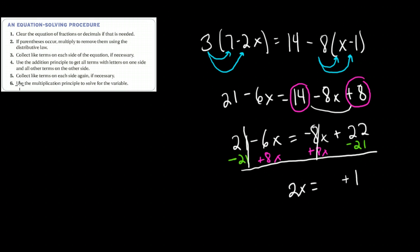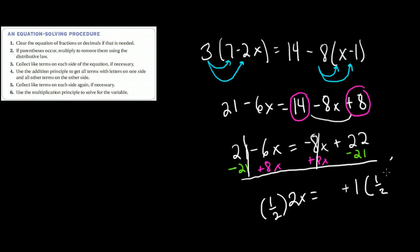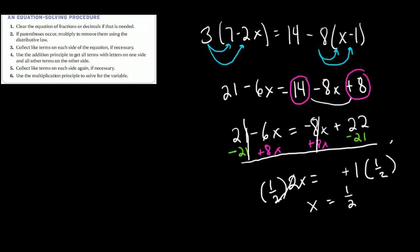I don't have like terms on both sides, so now I can use the multiplication principle. Let's go ahead and divide both sides by 2. Remember, dividing by 2 is the same thing as multiplying by 1/2 — I multiply by the reciprocal of 2. On the left, the two's cancel, and I'm left with x equal to 1 times 1/2, which is just 1/2.